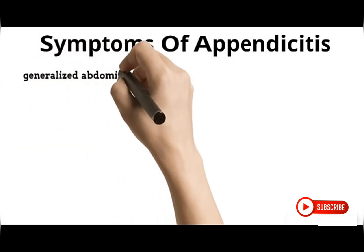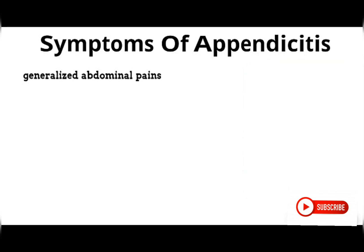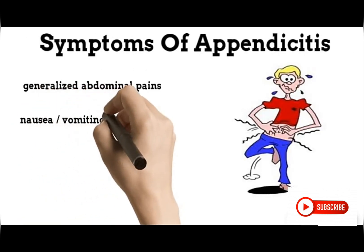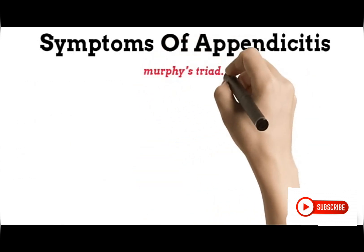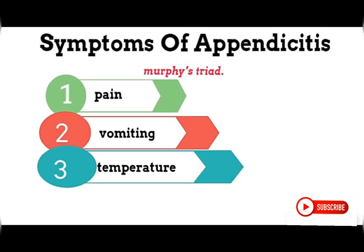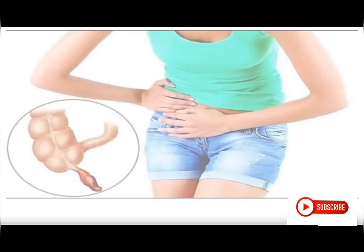When the appendix is inflamed, there is intermittent generalized abdominal pain that usually begins from the belly button and eventually radiates to the right iliac fossa. It is often accompanied by nausea, vomiting, poor feeding, fever, and chills. There is something called Murphy's triad, which consists of pain, vomiting, and raised temperature. If a patient presents with pain migrating from the umbilicus to the right iliac fossa, increased body temperature, and vomiting, you should at least suspect acute appendicitis.